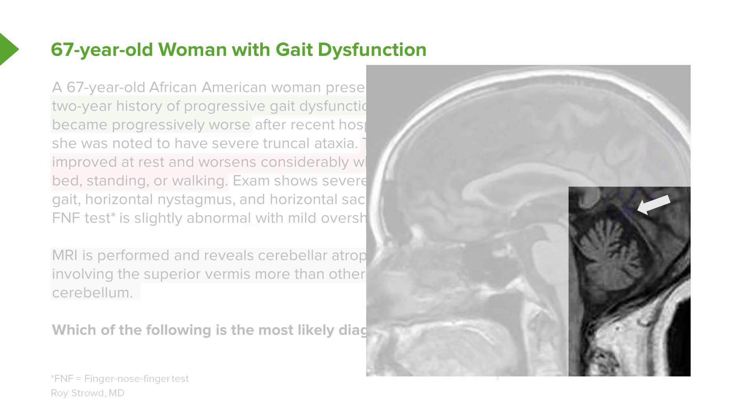We see atrophy of the cerebellum on a midline cut. This is a sagittal MRI looking right at the middle of the cerebellum, right at the area of the vermis. We see atrophy across the cerebellum, but preferentially affecting the upper part of the cerebellum — that superior lobe, the top lobe along the vermis. Certain conditions will affect only the hemispheres, only the vermis, and one that we think about has a predilection for the superior cerebellar vermis.